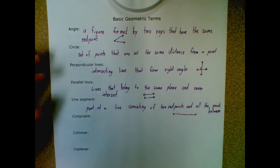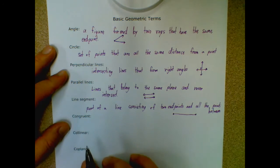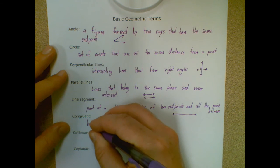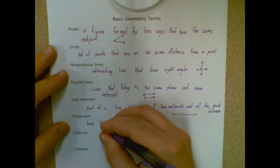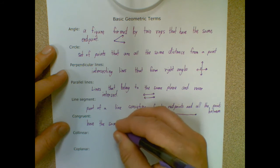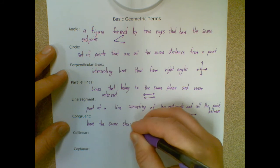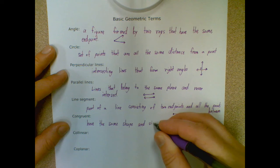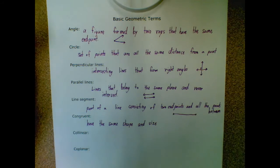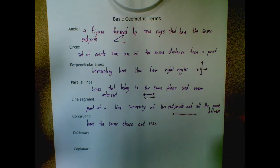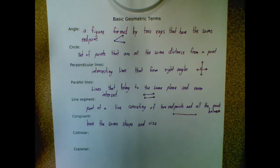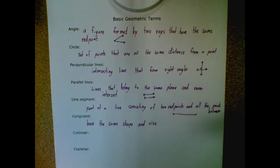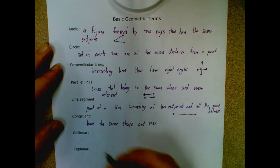All right, so those are the longer ones. These last three are a little bit shorter. Congruent means you have the same shape and size. So if you have two circles that are the same size, they're the same shape because they're both circles — you could say those two circles are congruent. Or maybe you have two line segments that are congruent. It's a way to compare two shapes.